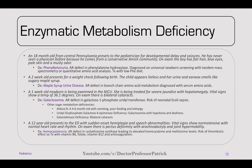A one-week-old newborn in the NICU is being treated for severe jaundice and hepatomegaly. On exam, there are bilateral cataracts — typical of galactosemia. It's an autosomal recessive defect in galactose-1-phosphate uridyltransferase, and there's a risk of neonatal E. coli sepsis. For comparison: aldose B deficiency presents at four to six months with vomiting, poor feeding, and lethargy; UDP-galactose-4-epimerase deficiency is similar to galactosemia with hypotonia and deafness; and galactokinase deficiency presents with just bilateral cataracts.